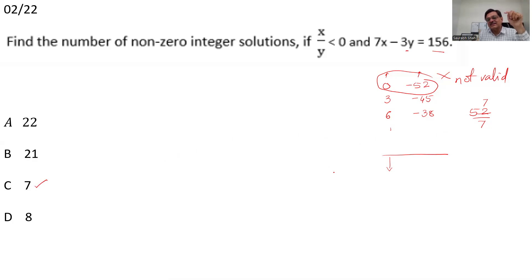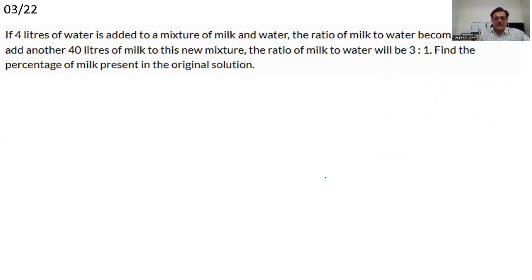When we subtract it the 8th time, when we add 7 to minus 52 for the 8th time, x and y will both become positive and invalid. So there are 7 solutions. Simply minus 52 divided by 7 gives you a quotient 7. That's it, 7 solutions.